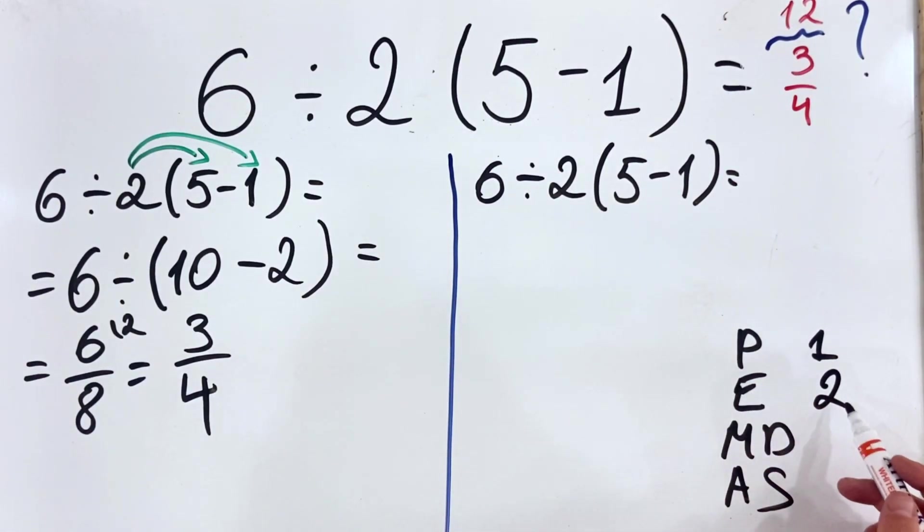E stands for exponents, needs to be done in the second place. Multiplication and division have equal priority, and they need to be done from left to right, and addition and subtraction is in the fourth place.